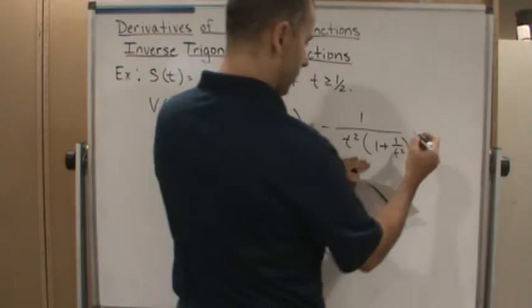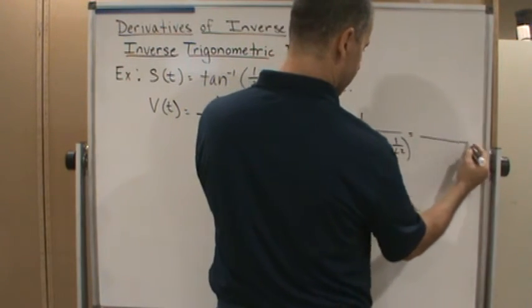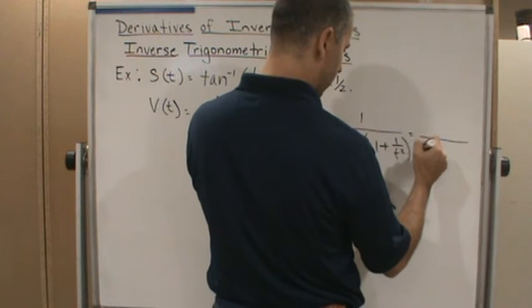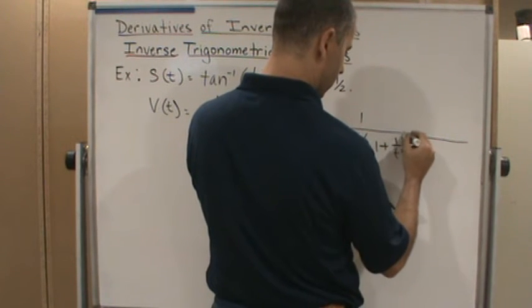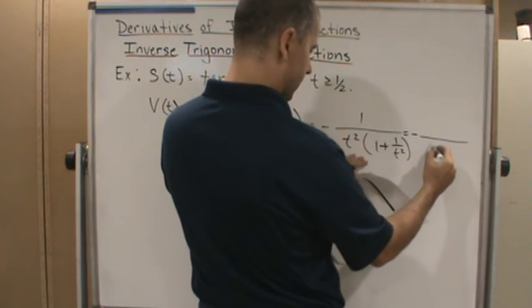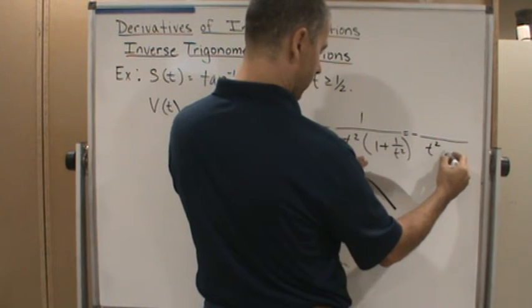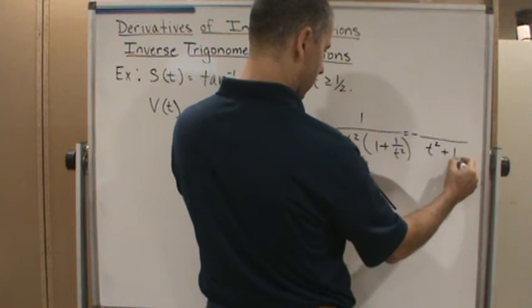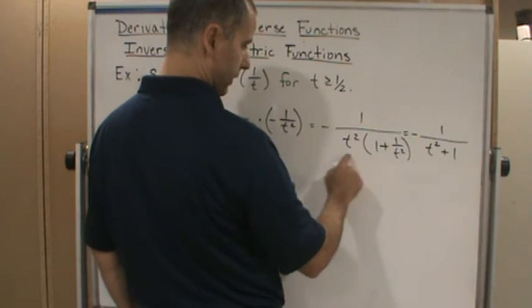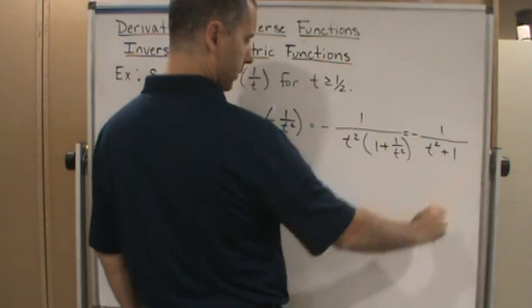If I distribute this, it will simplify more. This will be negative 1 over—when I distribute, I get t squared plus 1.